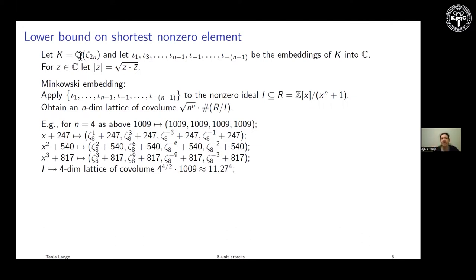You have the number field Q adjoin zeta_{2n}. Depending on which root you map to e^{2πi/(2n)}, you get a different embedding. Think of the small example of the Gaussian integers: plus i and minus i are your two choices. In number theory these are called embeddings — taking the field K and embedding it into the complex numbers. For 2nth roots of unity, the primitive roots are the odd powers, giving indices 1, 3, 5, etc., up to n minus 1.